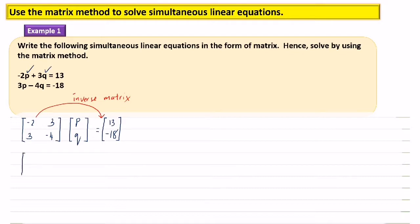We write pq at the front, equals the inverse matrix of negative 2, 3, 3, negative 4, which is 1 over (negative 2 times negative 4) minus (3 times 3).